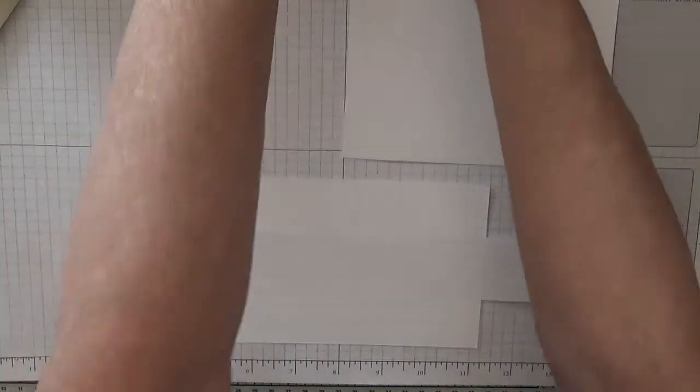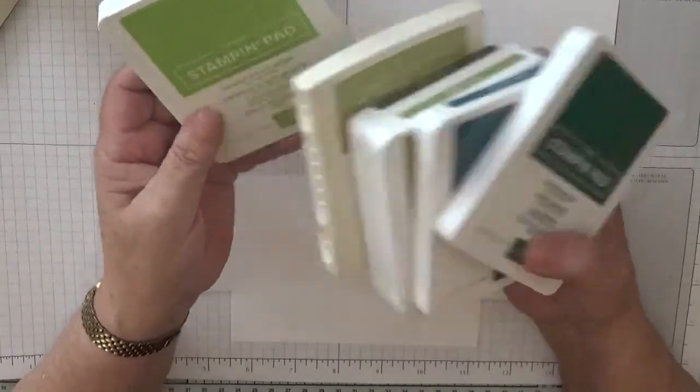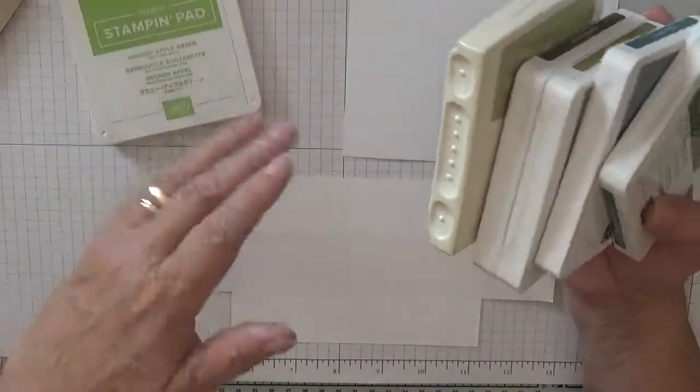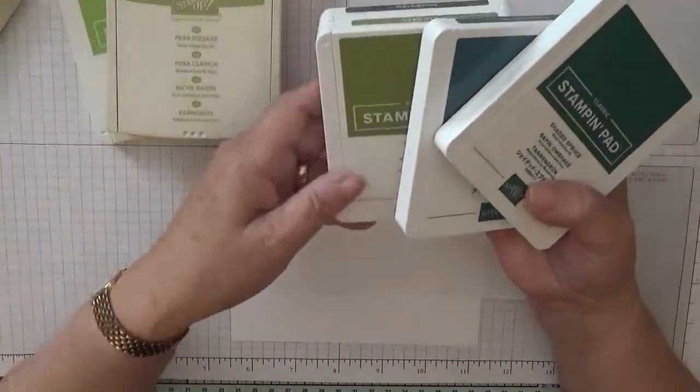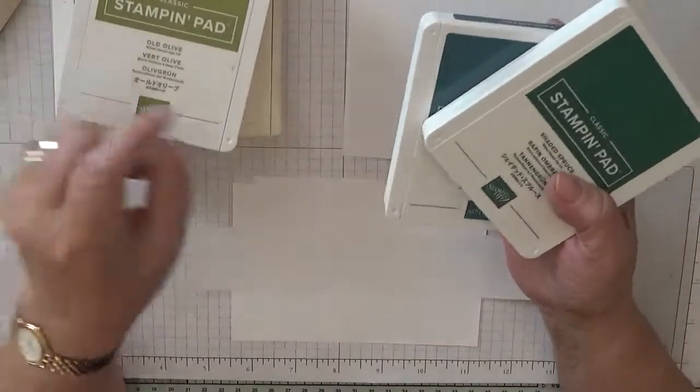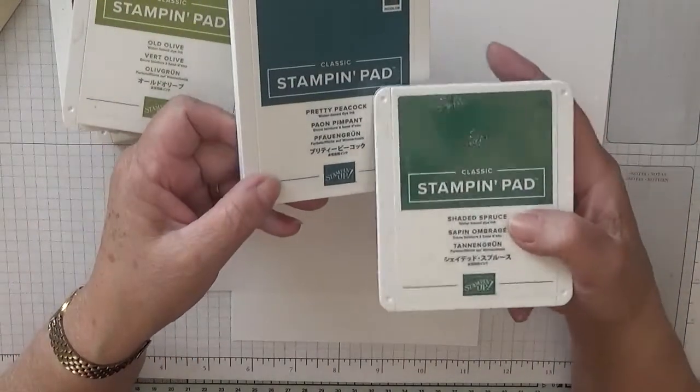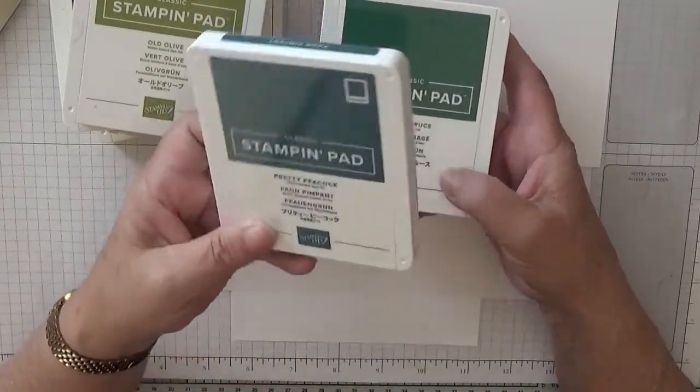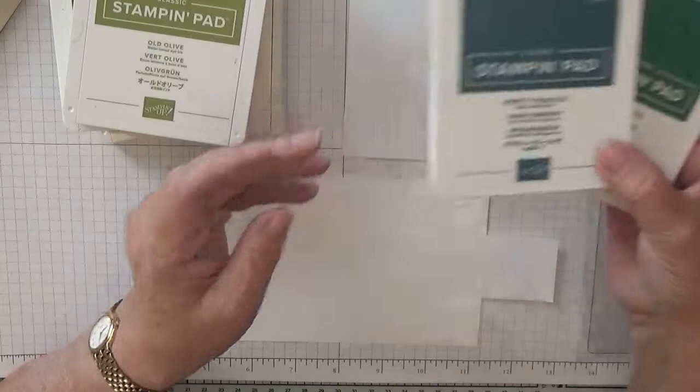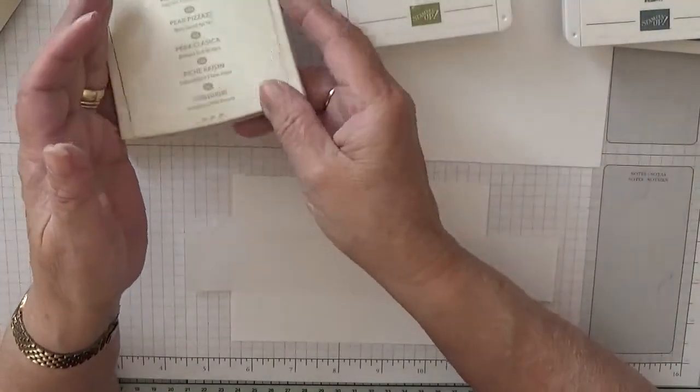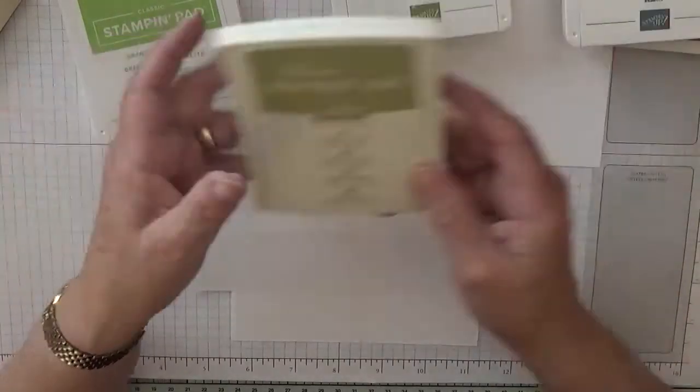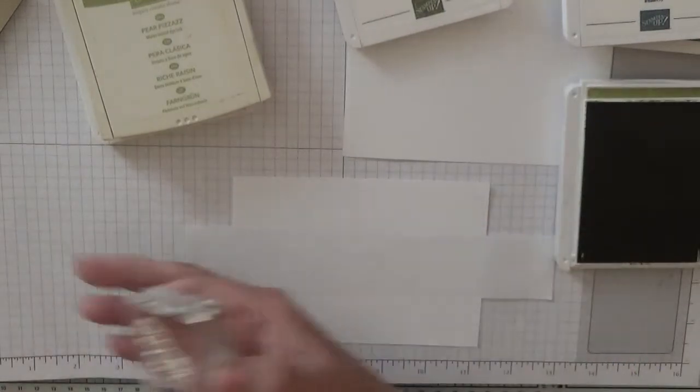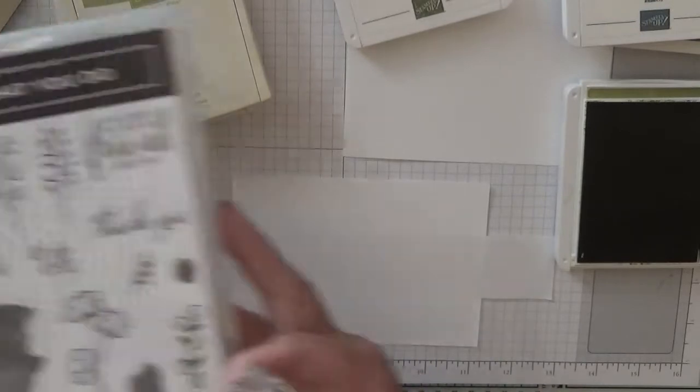What I've done ink-wise, I've got all my greens out. So I've got Granny Apple Green. I never use that on this card, only because I didn't see it when I was looking for my inks. Pear Pizzazz, Mossy Meadow, Old Olive, Pretty Peacock. This is a bluey-green which I think goes well with it. And Shaded Spruce. So we're going to use all these. Let's start with Old Olive first.